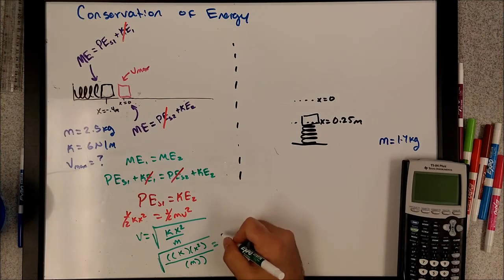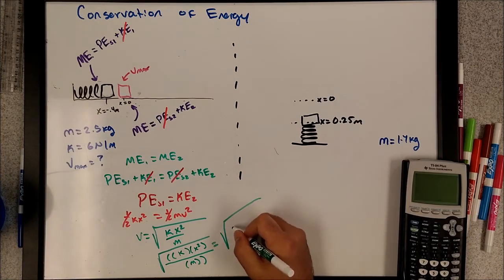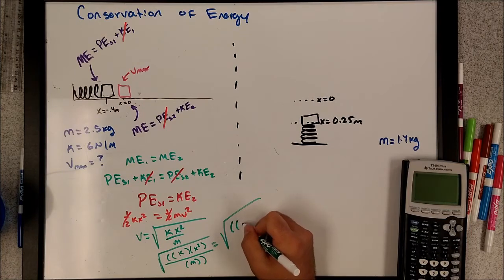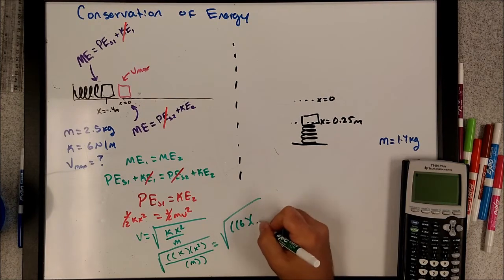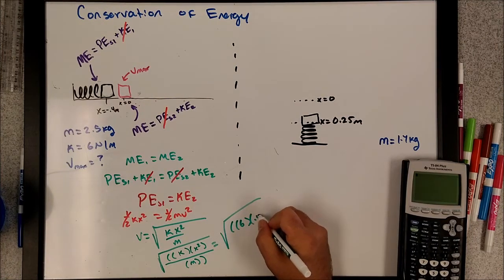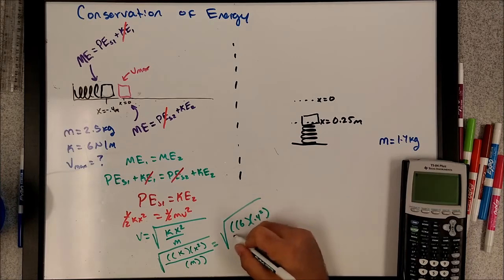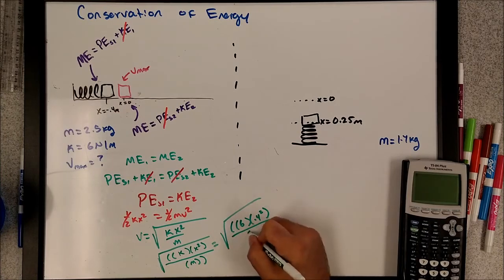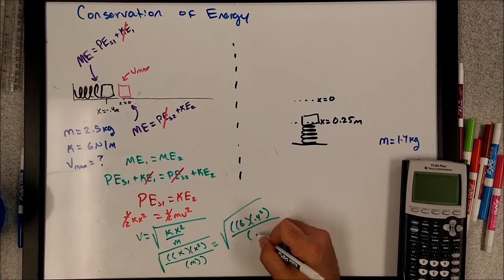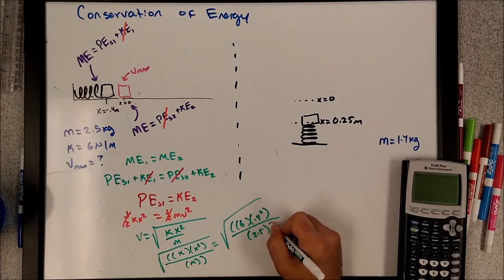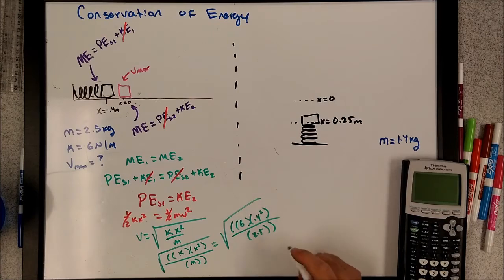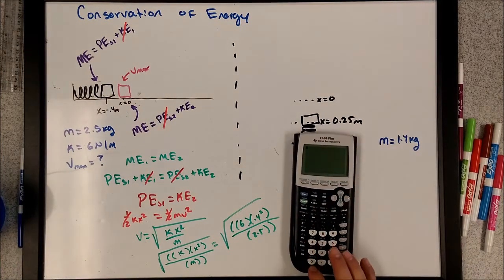Now plugging in the numbers: square root of (6 times 0.4-squared, divided by 2.5).